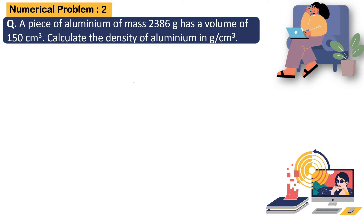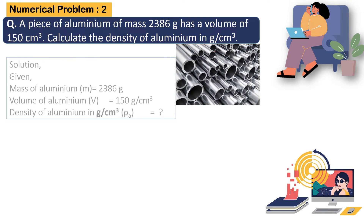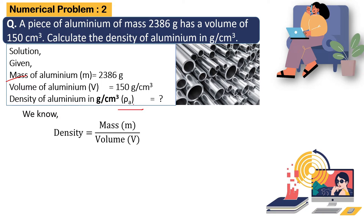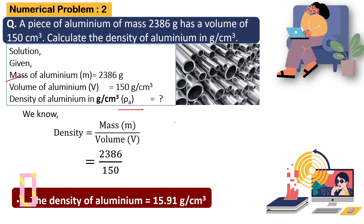Numerical Problem 2: A piece of aluminum of mass 2,386 grams has a volume of 150 cm cube. Calculate the density of aluminum in grams per cm cube using the CGS system. Given: mass of aluminum is 2,386 grams, volume is 150 cm cube. Using the direct formula — density equals mass by volume — the density of aluminum is approximately 15.91 gram per cm cube.